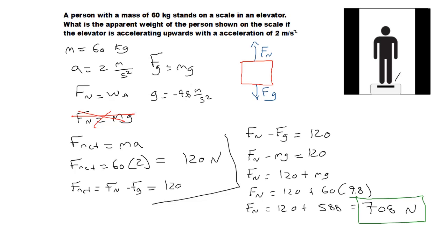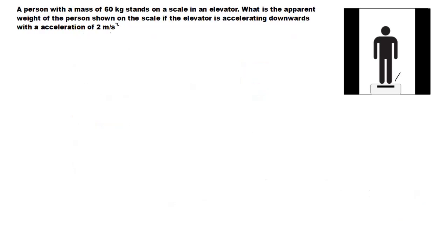What do you think would happen if the elevator were going down? Would the weight continue to increase or would it decrease? Let's find out. Now the elevator is accelerating downwards with an acceleration of 2 meters per second squared. The mass is 60 kilograms. The acceleration is downwards, so by convention the acceleration has to be negative. Acceleration has direction — it is a vector quantity with magnitude and direction.